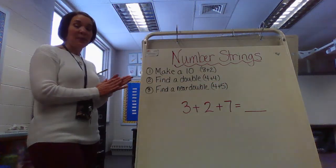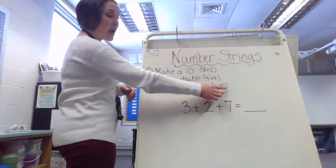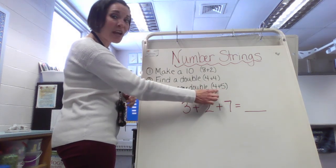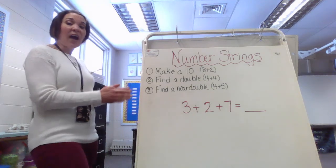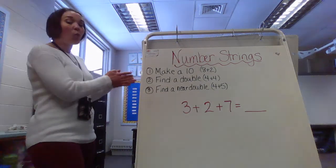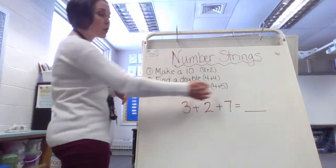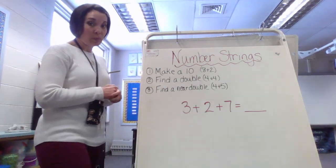Now, I could take it from the opposite end too. I could say 5 plus 5, I could use that as my double, but I have to take 1 away because of this 4. So 5 plus 5 is 10, take away 1, then your answer would be 9. So here, 4 plus 5 would be 9.